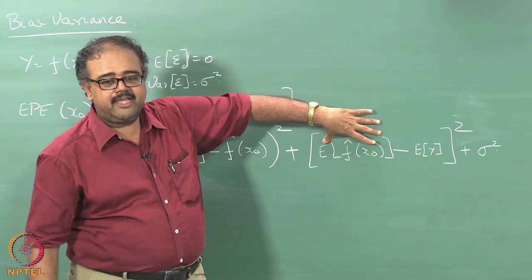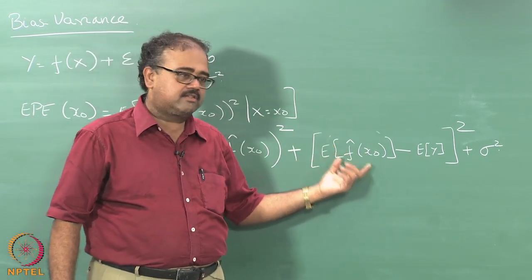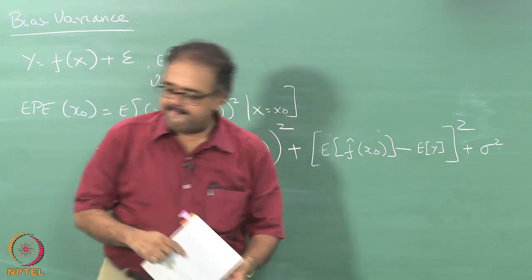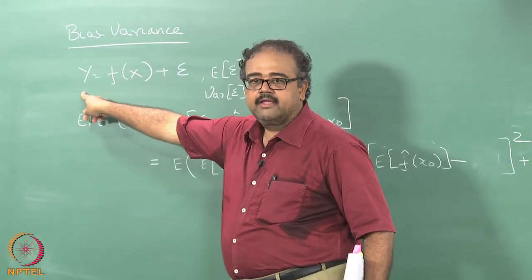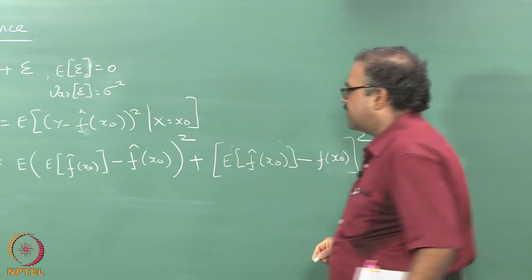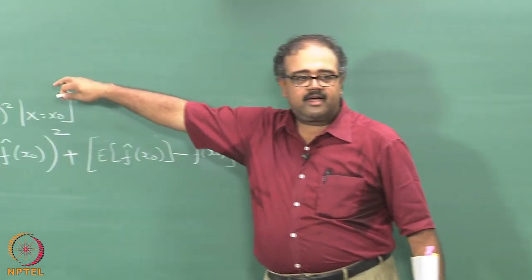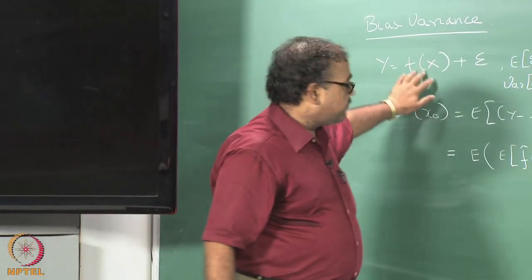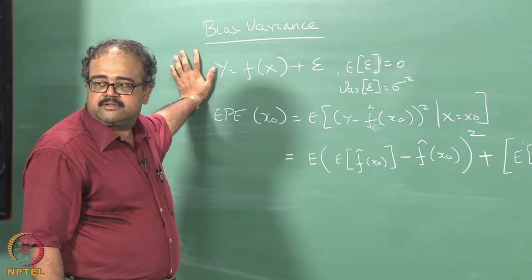The other component is: look at the expected prediction I will make for x naught, taken over multiple training instances. What is the expected prediction I will make for x naught and what is the expected true output I am going to get? The expectation of Y in this case is f of x naught. And then there is an underlying error sigma squared that just comes from the fact that I have a variance of sigma squared — even if my output is f of x, there will be an expected error of sigma squared because my Y has that noise in it.